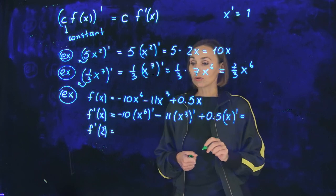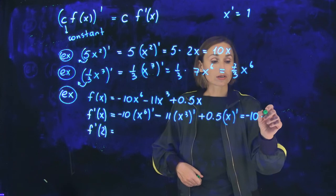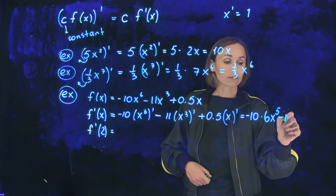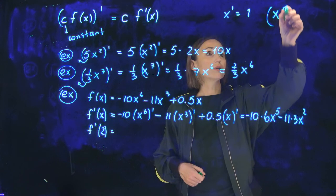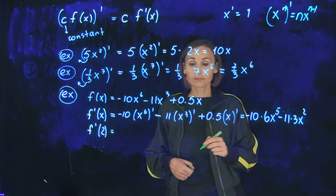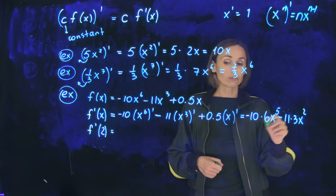Now, let's do it. So here I have negative 10. Derivative of x to the 6 is 6x to the power 5 minus 11. Derivative of x cubed is 3x squared. If you do not remember the formula, let me just remind it to you: x to the power n prime is n x to the power n minus 1. And the last term will be just 0.5 because it is 0.5 times 1.